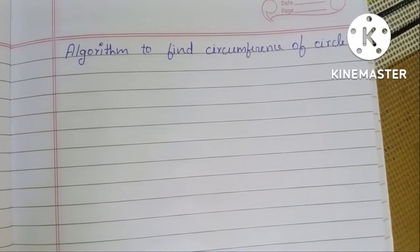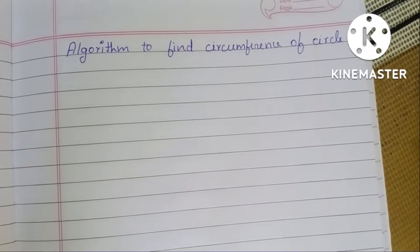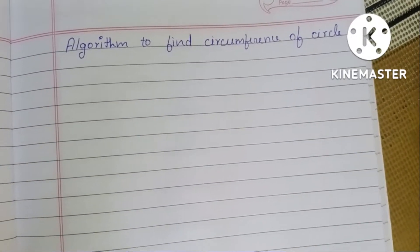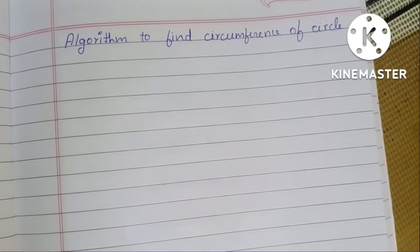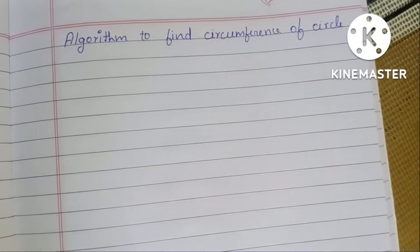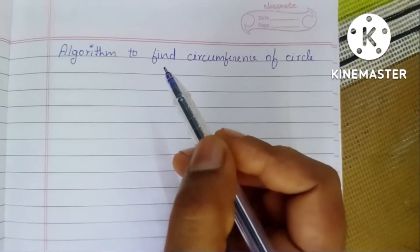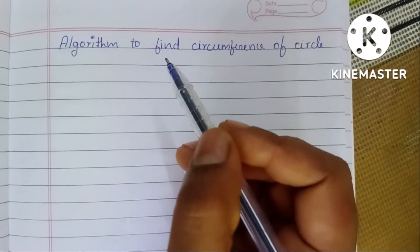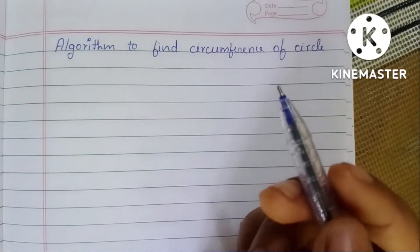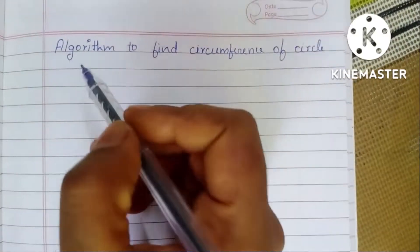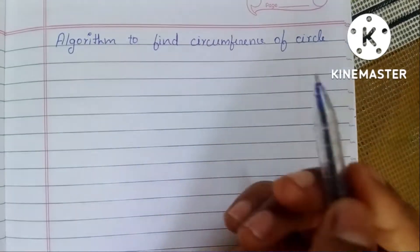Hello guys, in this video we are going to learn how to write an algorithm to find the circumference of a circle. An algorithm is a step-by-step process to solve a problem.